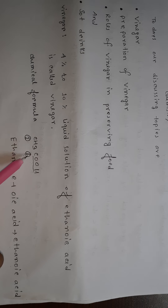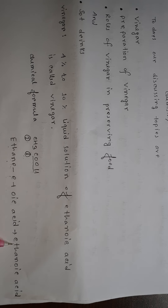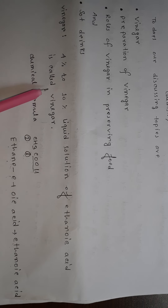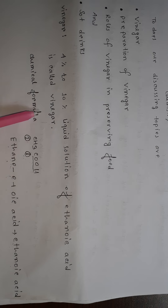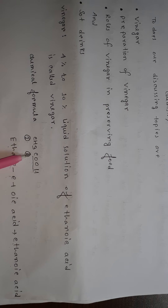The alkane name for two carbons is ethane. From ethane, the 'e' is eliminated and '-oic acid' is added, giving us ethanoic acid. So to repeat: a four to ten percent liquid solution of ethanoic acid is called vinegar. The chemical formula of vinegar is CH3COOH, whose name is ethanoic acid.